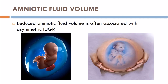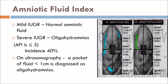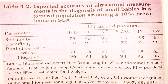Reduced amniotic fluid volume is often associated with asymmetric IUGR. In mild IUGR, amniotic fluid may be normal. In severe IUGR, oligohydramnios occurs with an incidence of 40%. On ultrasonography, a pocket of fluid less than 1 centimeter is diagnosed as oligohydramnios. A summary table of the expected accuracy of ultrasound measurements in diagnosing small babies is also provided.